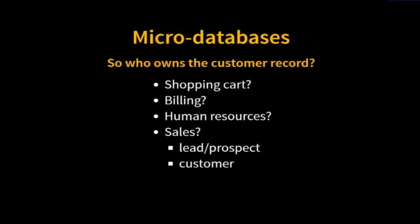Another concern when we move here is how do we store the customer record? This customer record is owned by a lot of different places, and they'll each have additional metadata associated with this customer. How about a shopping cart? They're the ones producing orders — maybe they should own the customer record. Or billing — they probably have credit card numbers stored, and we definitely don't want those leaking out of the microservice. Human resources has lots of secrets. Or sales — they're the ones who created the customer in the first place. How about we create a new customer microservice and a new customer micro database with just two columns: one with the account number and one with the primary key. All of these services can call that customer microservice to create a new customer or resolve a primary key into an account number.